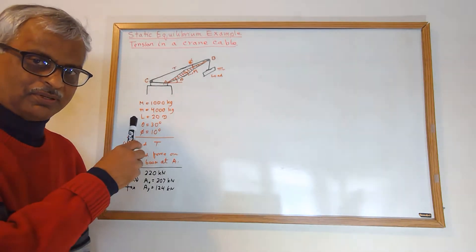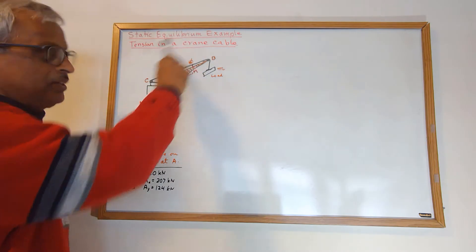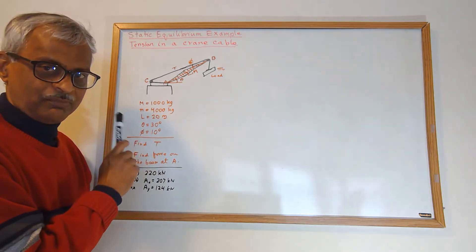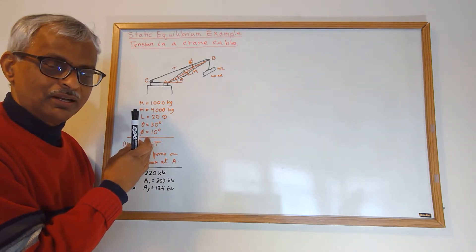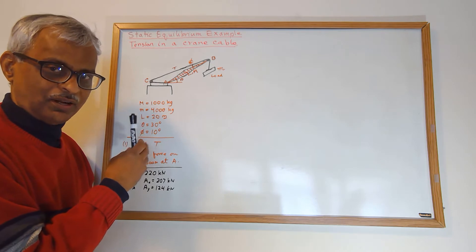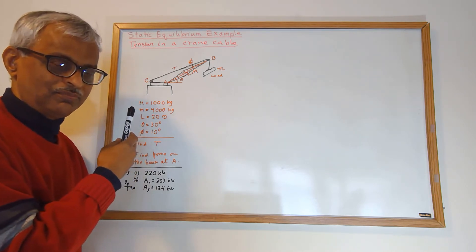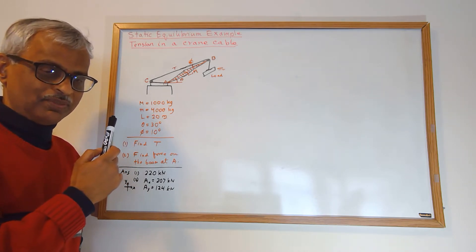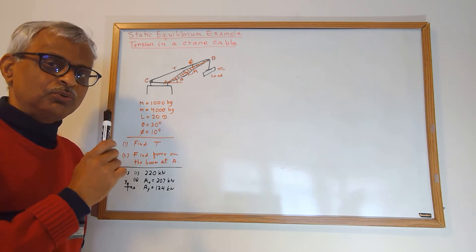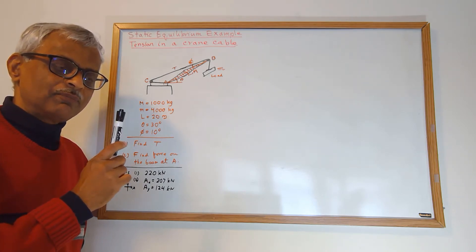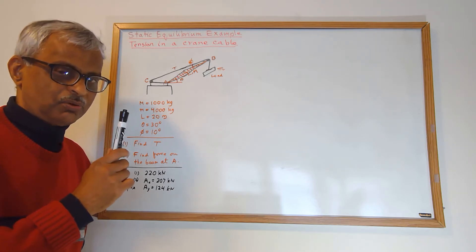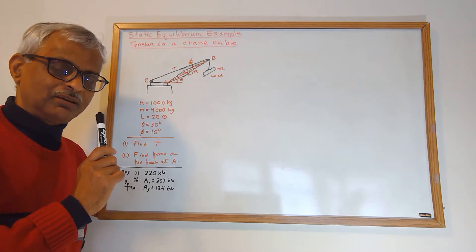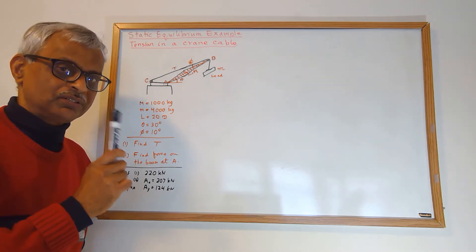We are going to review static equilibrium through this example. This is a complicated example in terms of the diagram and how many systems there are. This is very normal in applications of static equilibrium, but when you apply it, you work with forces on a particular body, so you have to carefully select the body to focus on.